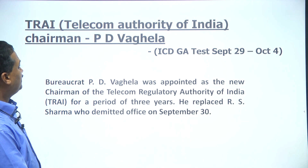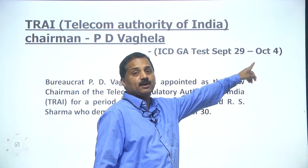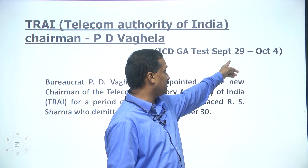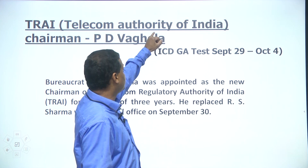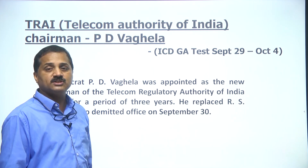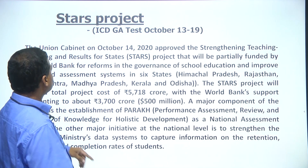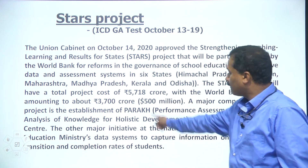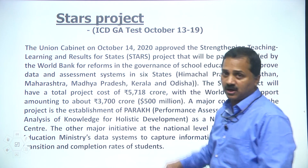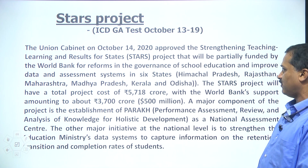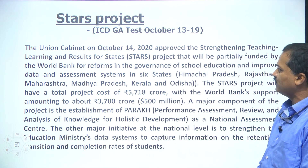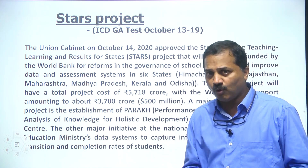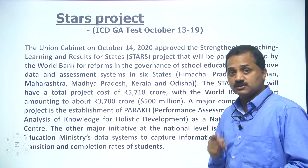TRAI — Telecom Regulatory Authority of India — chairman PD Vaghela — that was in ICDG test September 29–October 4. On that particular week, I gave the information that Mr. PD Vaghela was appointed the chairman of TRAI. STARS project — ICDG test October 13–19. STARS stands for Strengthening Teaching-Learning and Results for States — a project partially funded by the World Bank for reforms in the governance of school education and improved data and assessment systems in six states.